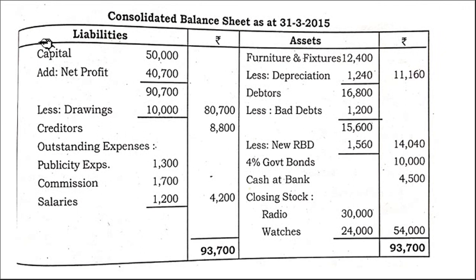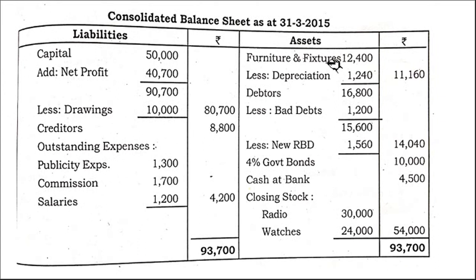In the consolidated balance sheet, on the liabilities side: capital plus net profit less drawings, then creditors, and outstanding expenses for all three items as liabilities. On the assets side: furniture and fixtures less depreciation, debtors less bad debts less RBD, four percent government bonds, cash at bank, and closing stock. Once all entries are made, the balance sheet tallies.